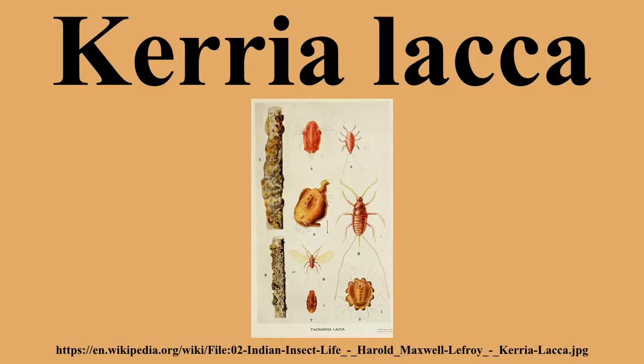K. lacca also produces a dyna wax as natural secretions. The life cycle of the scale insect proceeds with the first instar of the larval stages, which are known as crawlers. Larvae in this stage crawl along the branches of the host plants and feed on the phloem.